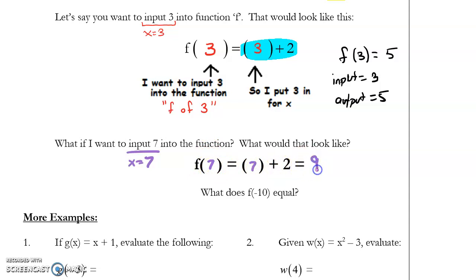7 plus 2 is 9. So I could say that when I input 7 into function f, my output is 9. I could write that this way, input equals 3, output equals 5, so input equals 7, output equals 9. We can write that as an ordered pair, or in parentheses as a coordinate, input 7, output 9.